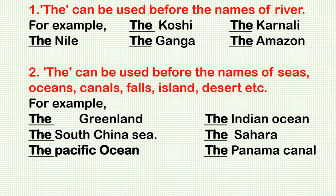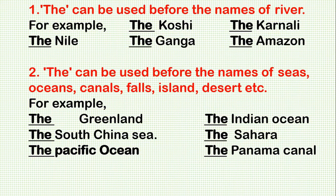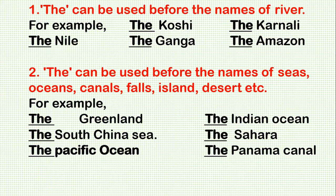Rule 2: 'The' can be used before the names of seas, oceans, canals, falls, and islands. For example: the Greenland (the biggest island of the world), the Indian Ocean, the South China Sea (the biggest sea in the world), the Sahara (a desert), the Pacific Ocean, the Panama Canal, the Suez Canal, the Atlantic Ocean, the Arctic Ocean, the Antarctic Ocean, etc.